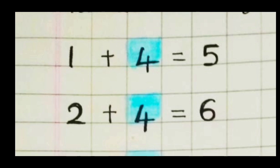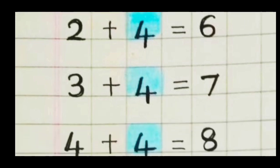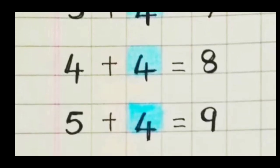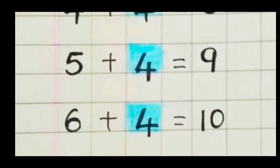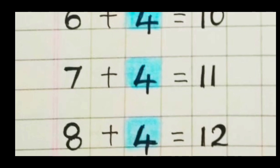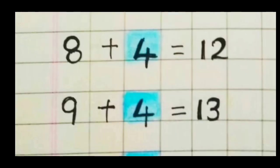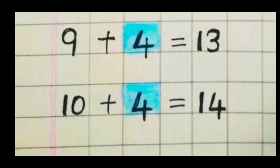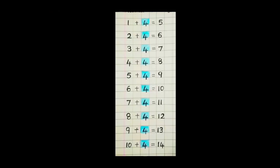Repeat again. One plus four is five. Two plus four is six. Three plus four is seven. Four plus four is eight. Five plus four is nine. Six plus four is ten. Seven plus four is eleven. Eight plus four is twelve. Nine plus four is thirteen. Ten plus four is fourteen. Step three — you can say with me. One plus four is five. Two plus four is six. Three plus four is seven. Four plus four is eight. Five plus four is nine. Six plus four is ten. Seven plus four is eleven. Eight plus four is twelve. Nine plus four is thirteen. Ten plus four is fourteen.